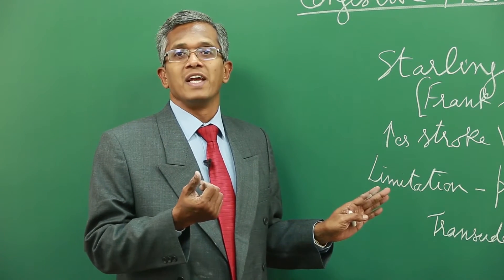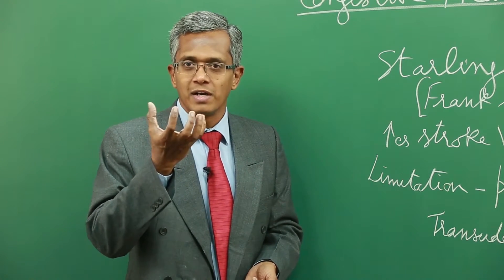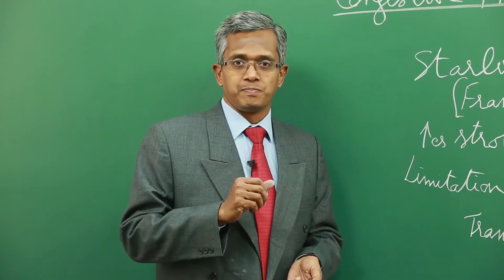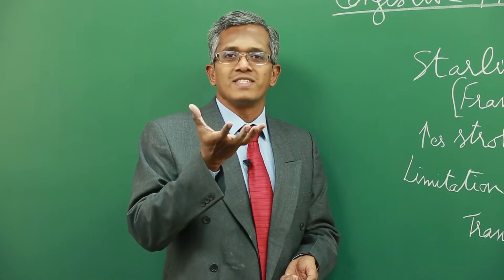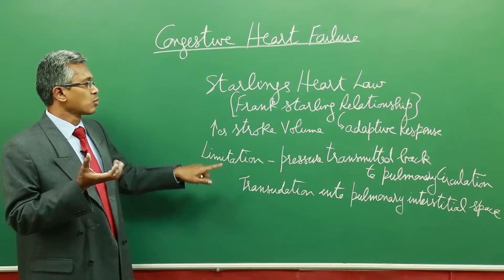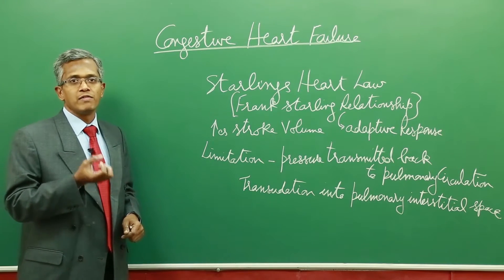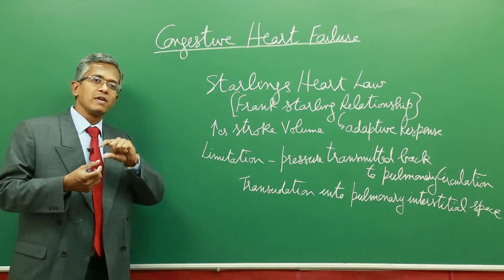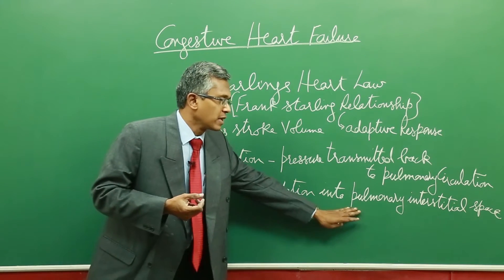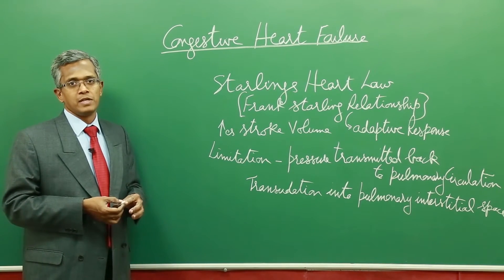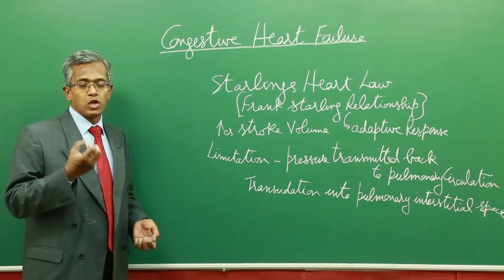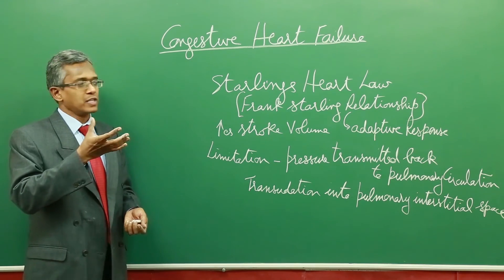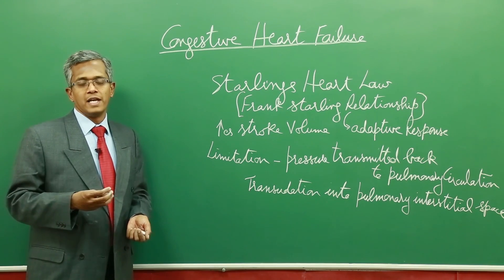More relaxation or more fiber length leads to increased force of contraction of the heart, but there is a limitation. Whenever preload is increased beyond a point, the pressure is transmitted back to the pulmonary circulation. As the preload increases, the pressure enters into the pulmonary vasculature, causing transudation into the pulmonary interstitial space, leading to pulmonary edema. So the increase in stroke volume through this adaptive mechanism has a definite limitation.